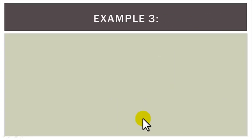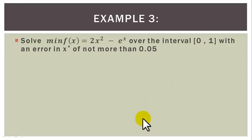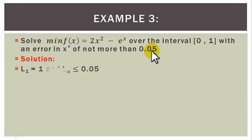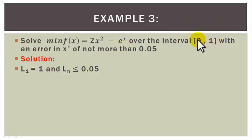Example 3: solve the optimization problem — minimize F of X equals to 2X squared minus exponent X over the interval 0 to 1, with an error in X star of not more than 0.05. Solution: the length of our initial interval of uncertainty L1 is equal to 1, that is 1 minus 0 gives us 1, and the length of the last interval of uncertainty LN should be less than or equal to epsilon, which is equal to 0.05.